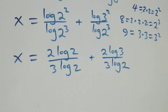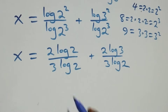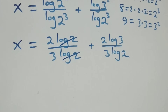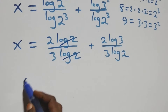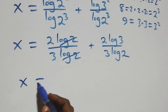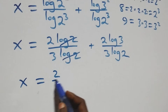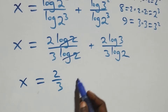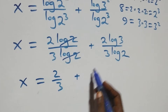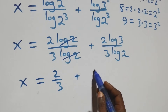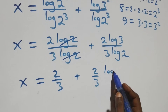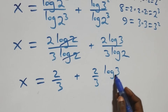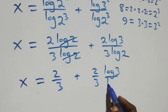From here, log 2 cancels in the first fraction, and we are left with 2 over 3. So x equals to 2 over 3 plus, and the second term we can separate as 2 over 3 times log 3 over log 2.